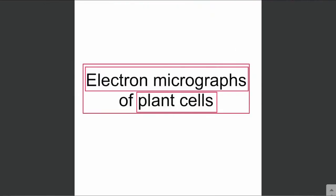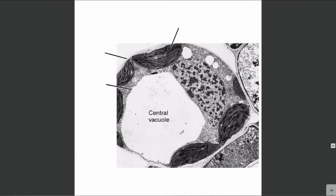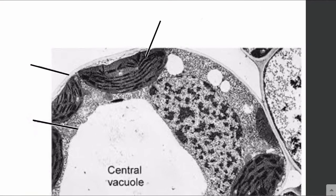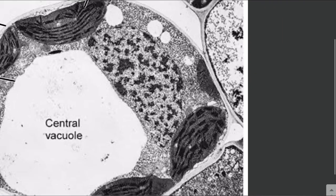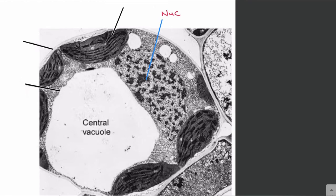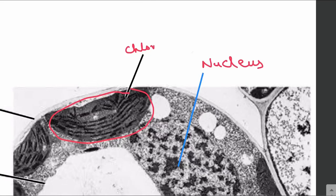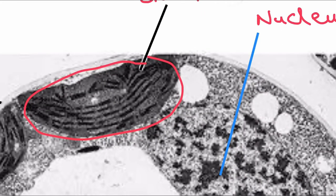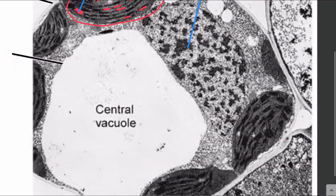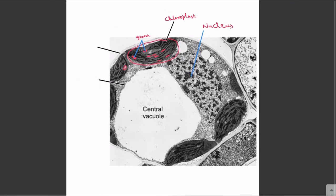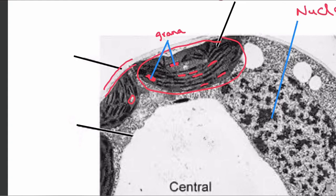Let's have a look at another electron micrograph of a plant cell. If we label the structures, this is the nucleus and this structure over here is the chloroplast. Looking at this picture, structures inside the chloroplasts are more evident. These dark lines are the grana, which are stacks of thylakoids. You can also see starch grains in the chloroplasts, and this structure here is the cell wall.